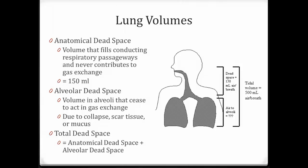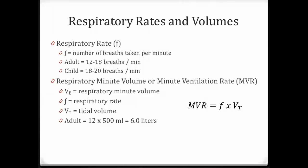Total dead space is adding anatomical dead space and the alveolar dead space together. Respiratory rate is basically how many breaths you take per minute. You can see adults breathe a little bit less than children do.